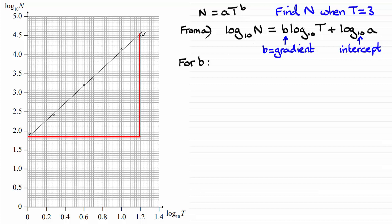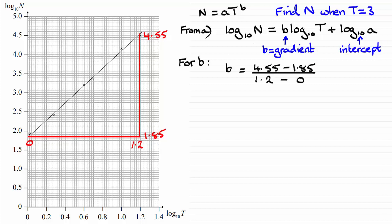I've chosen this triangle — the bigger the triangle the better your chances of getting a good estimate. I've chosen these two points on the straight line. The gradient is the difference in y values divided by the difference in x values. Reading off the y values I can see 4.55 and 1.85, and the x values are 0 and 1.2. So the gradient is (4.55 − 1.85) ÷ (1.2 − 0), which gives a gradient of 2.25 — that's our value of b.